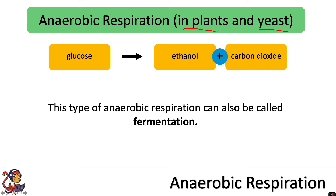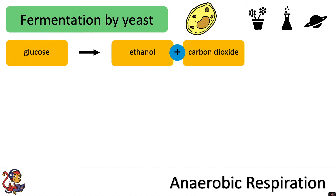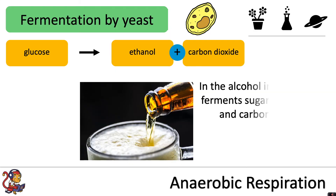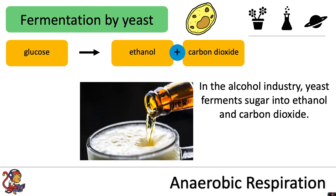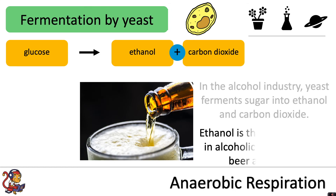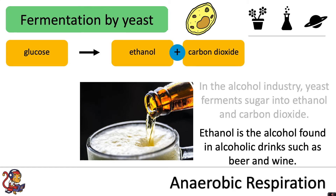I'm going to use the word fermentation to discuss a few examples. Fermentation by yeast can be very useful when yeast breaks down glucose into ethanol and carbon dioxide. In the alcohol industry, yeast ferments sugar into ethanol and carbon dioxide. Ethanol is the alcohol found in alcoholic drinks such as beer and wine, so this product is particularly useful in the alcohol industry.